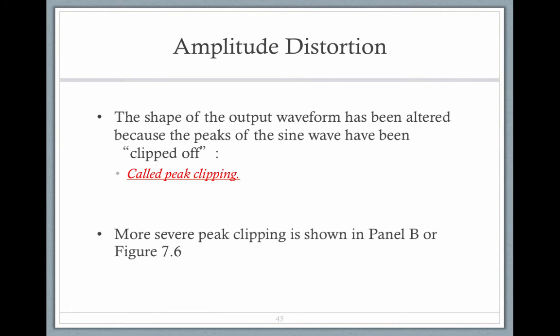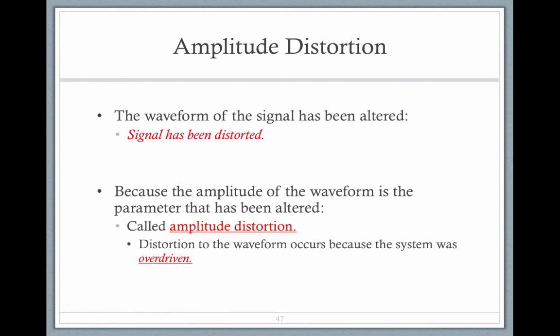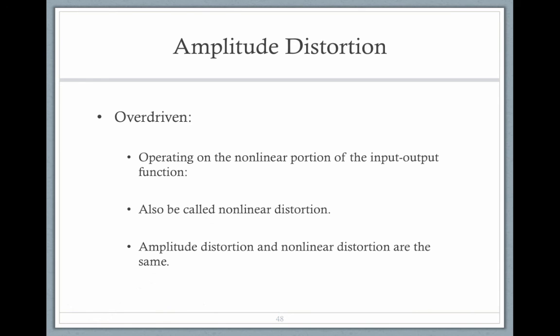And it's called peak clipping. So only the center portions of the waveform are unaffected when there is peak clipping. The signal is distorted. It's called amplitude distortion, and the waveform of the system has been overdriven. So we have non-linear distortion and amplitude distortion, which means the same thing.